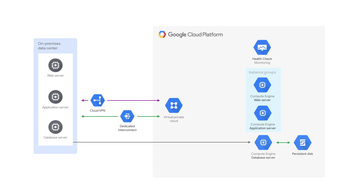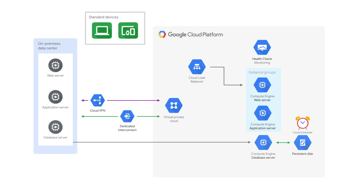Configure regional managed instance groups for the application and web servers. Then configure health checks using Stackdriver monitoring and load balancing using the regional managed instance groups. Configure a scheduled task to create regular snapshots of the persistent disk. And lastly, configure the DNS service to distribute traffic between your on-premise environment and the Google Cloud environment.